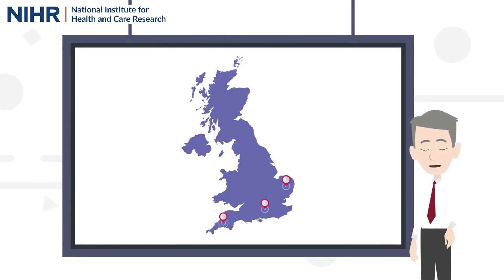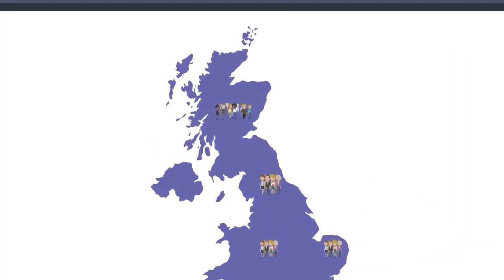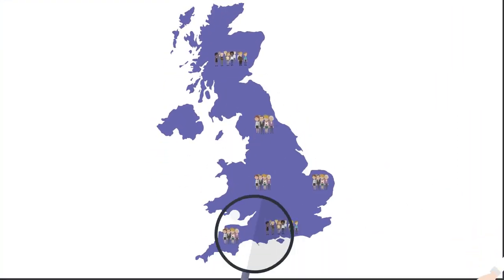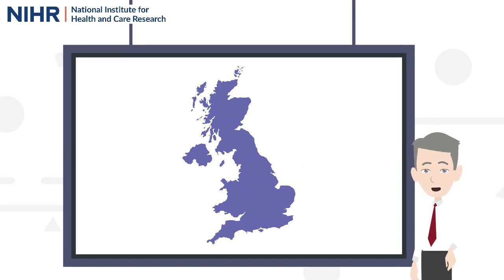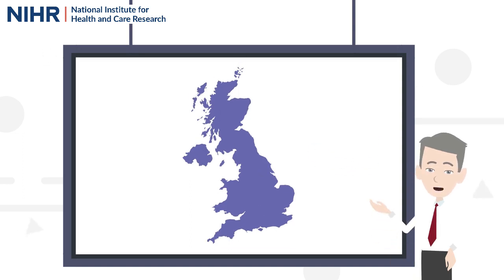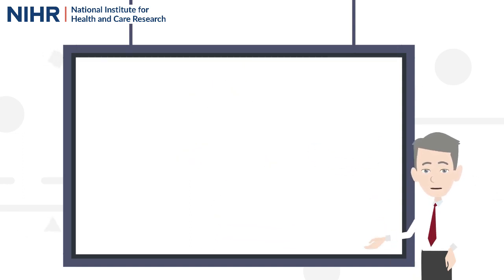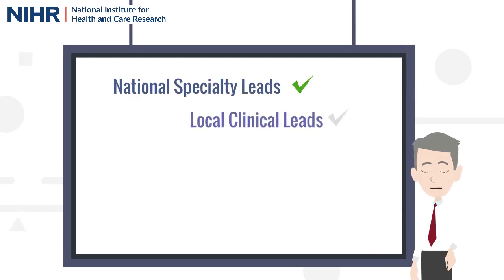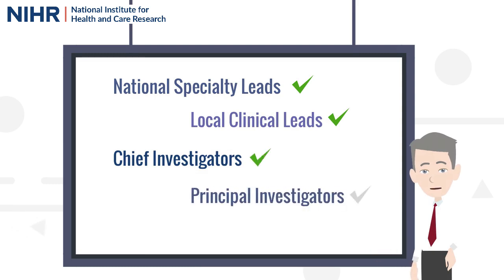ODP makes it easy to find where research is taking place, design research to ensure recruitment from populations and areas of greatest need, to find a study's recruitment activity, including where it is recruiting and how many participants it has recruited. ODP is a resource available to national specialty leads, local clinical needs, chief investigators, principal investigators and researchers.